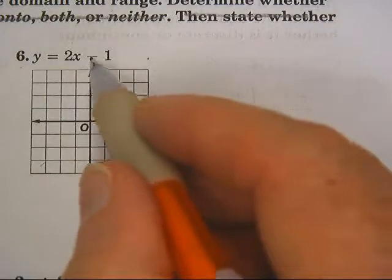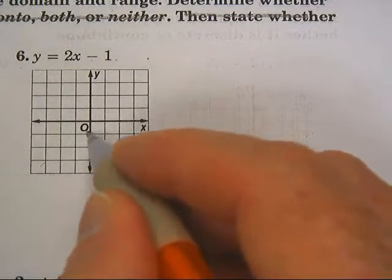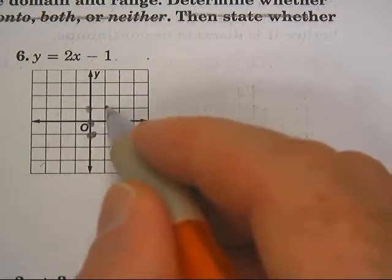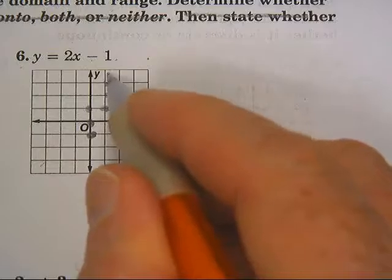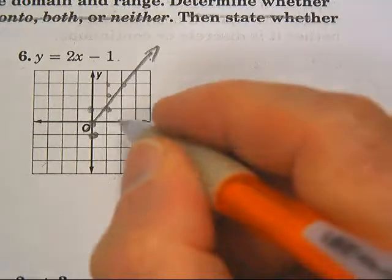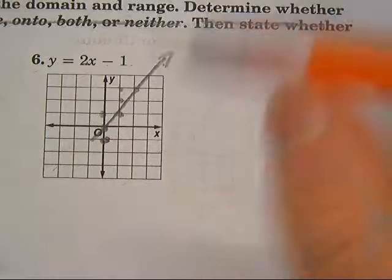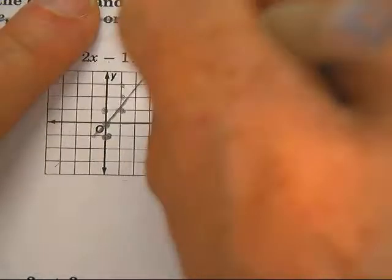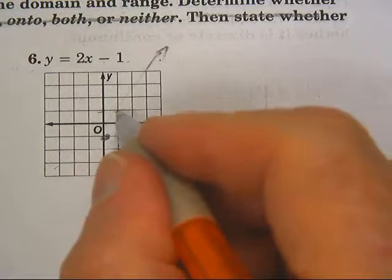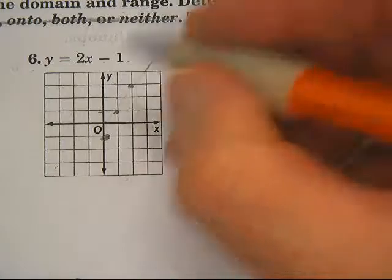Okay, they want me to graph it. Well, negative 1 is right here. The slope is 2 over 1, that's up 2 and to the right 1. Up 2 and to the right 1, so my line's going like that. Oops, let's try this again. Up 2 and to the right 1. Up 2 to the right 1. That's better. We got to go